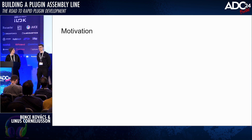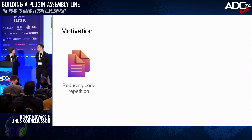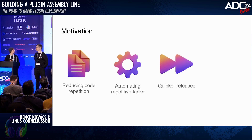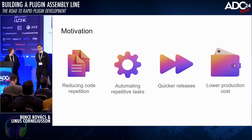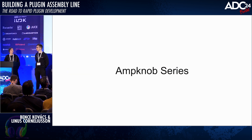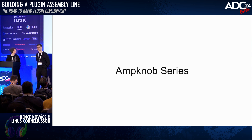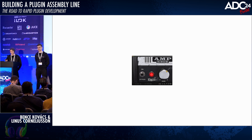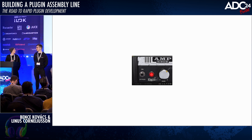A few quick words about the motivation behind this. We want to avoid reproducing code. We want to automate repetitive tasks, which ultimately leads to quicker releases and lower production costs. We're going to talk about our AMP knob series, which is a series of guitar amp simulators. It all started with an AMP knob called Rev-C, which is an emulation of a Mesa Boogie amp. The idea is to keep the UI very simple so the user just has one knob with more or less gain.